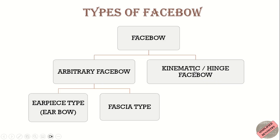There are two types of face bows: arbitrary face bows and kinematic or hinge face bows. The arbitrary face bow determines the approximate center of rotation of the condyle, while the kinematic face bow establishes the center accurately.